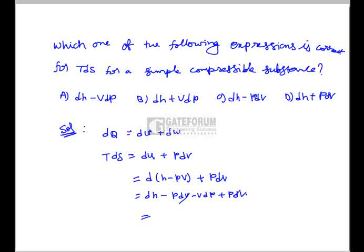The pdv terms cancel, leaving dh - vdp. Therefore TdS can be written as dh - vdp, and the correct answer is option A.